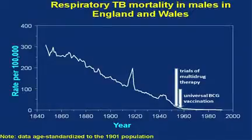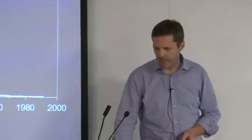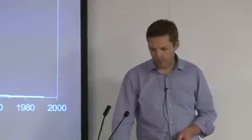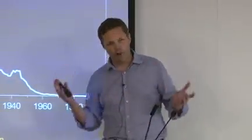Let's come back to England and Wales. This figure shows mortality from pulmonary TB from 1840 through to the late 1990s. There's quite a steady decline over time, with a blip for the First World War. What it shows us is that in times of social deprivation — overcrowding, poor nutrition, poor access to care — TB thrives.